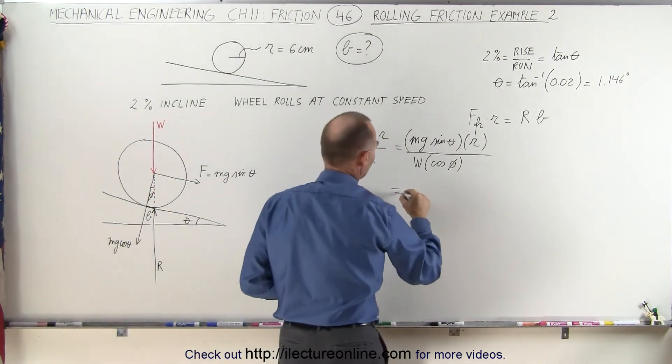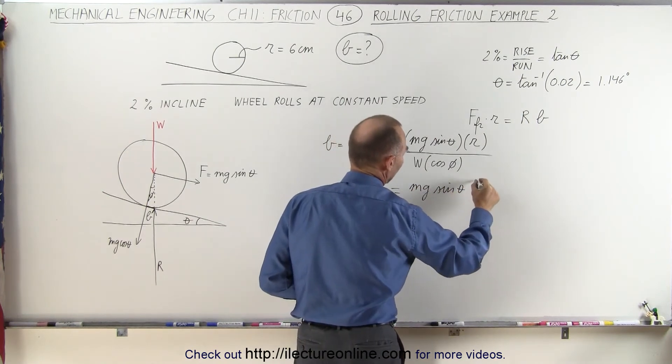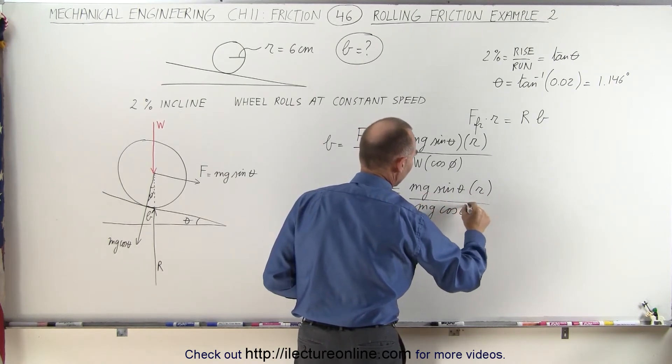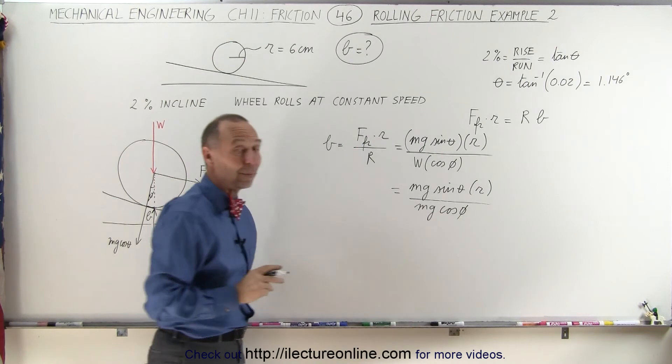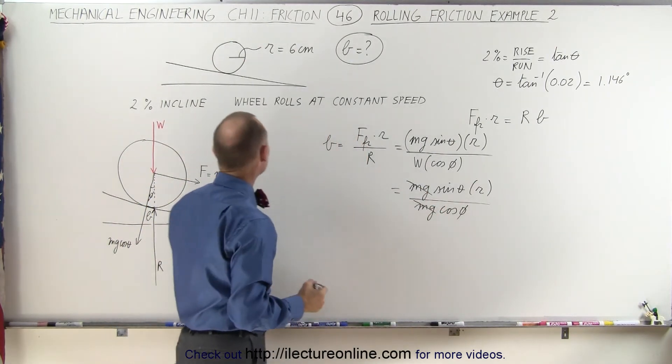So this is equal to mg sine of theta times the radius of the wheel divided by mg times the cosine of phi. Now we're ready to plug in some numbers, of course, after we cancel out the weight of the wheel.